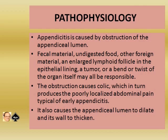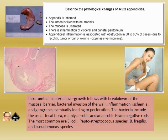Pathophysiology. Appendicitis is caused by obstruction of the appendiceal lumen by fecal material, undigested food, other foreign material, enlarged lymphoid follicles in the epithelial lining, a tumor, or a bend or twist of the organ itself. The obstruction causes colic, which produces the poorly localized abdominal pain typical of early appendicitis. It also causes the appendiceal lumen to dilate and its wall to thicken. The lumen fills with neutrophils, mucosa is ulcerated, and there is inflammation of the visceral and parietal peritoneum.